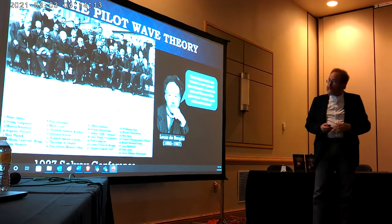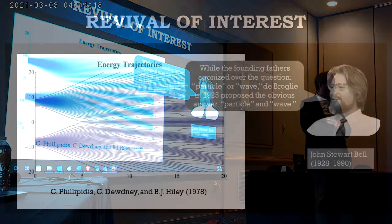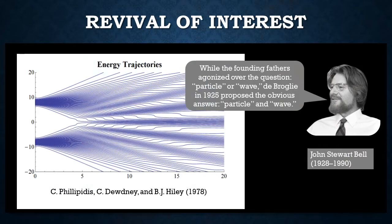That's more or less what happened for another couple of decades, until John Stuart Bell started exploring fundamental principles of quantum mechanics. Bell pointed out that while the founding fathers were arguing over particles versus waves, de Broglie had proposed the obvious answer: particles and waves — two separate entities. In the 1970s, work was done showing how using classical electromagnetics on the two-slit problem, you find energy flow trajectories matching specific concrete paths.